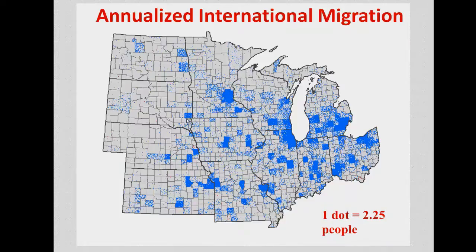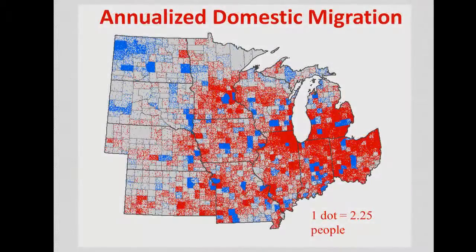Here's the international migration map — again, one dot equals 2.25 people. Most international migration is tightly aligned with metropolitan areas: here's the Des Moines metro, Cedar Rapids, Iowa City, the Twin Cities, Fargo, Sioux Falls, Kansas City, St. Louis, and Chicago. Relatively little international migration occurs in the more rural areas of the Midwest.